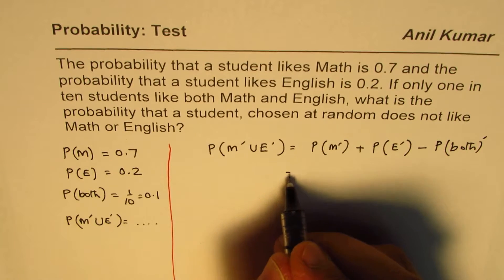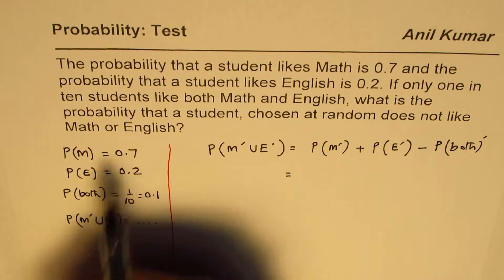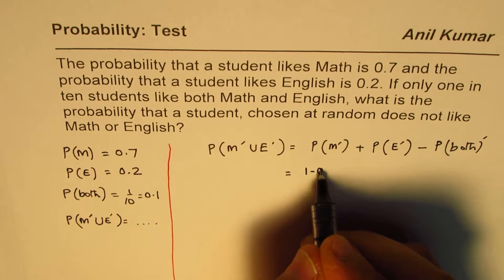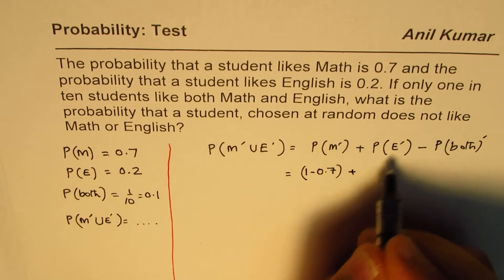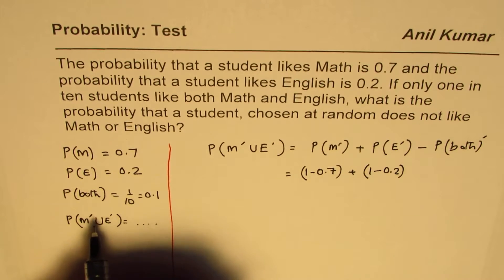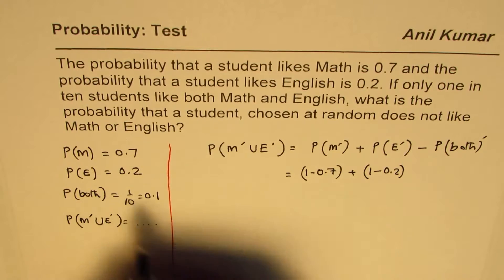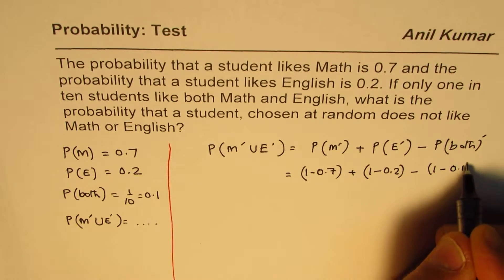Now, probability of those who do not like math will be 1 minus 0.7. From here we get that. As far as probability of those who do not like English is concerned is 1 minus 0.2 and for the ones who do not like both will be 1 minus 0.1.